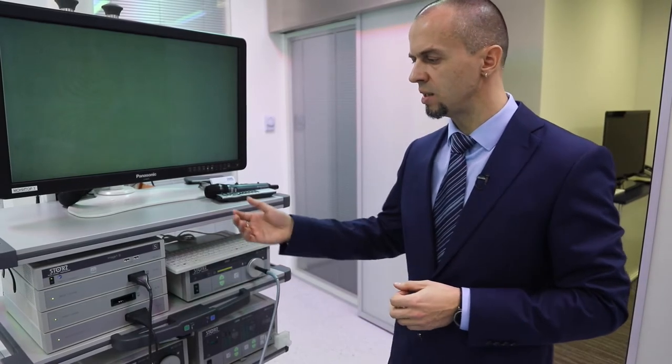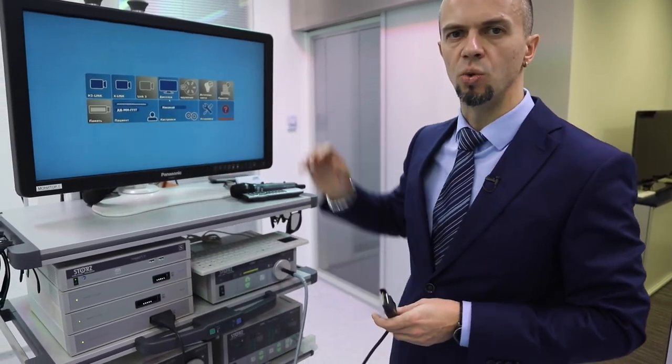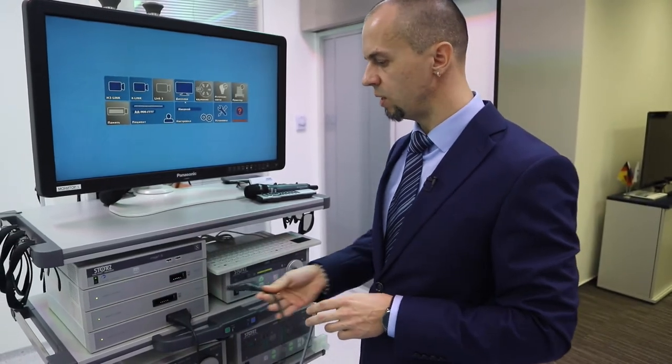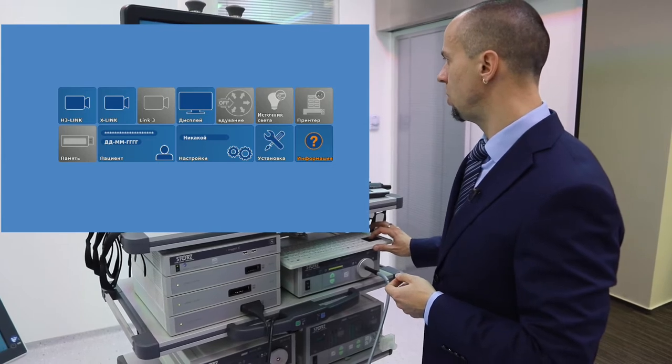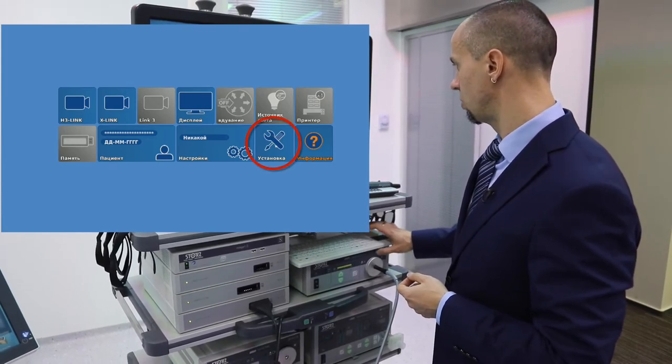Далее нам необходимо провести первые предварительные настройки. Для того чтобы, например, перевести систему в русский язык, необходимо зайти в глубокое системное меню. Сделать это можно, отсоединив головку камеры и убрав источник видеосигнала. Мы оказались в первом системном меню, откуда будем делать главные начальные настройки. Находим меню «Установка» и заходим в него.